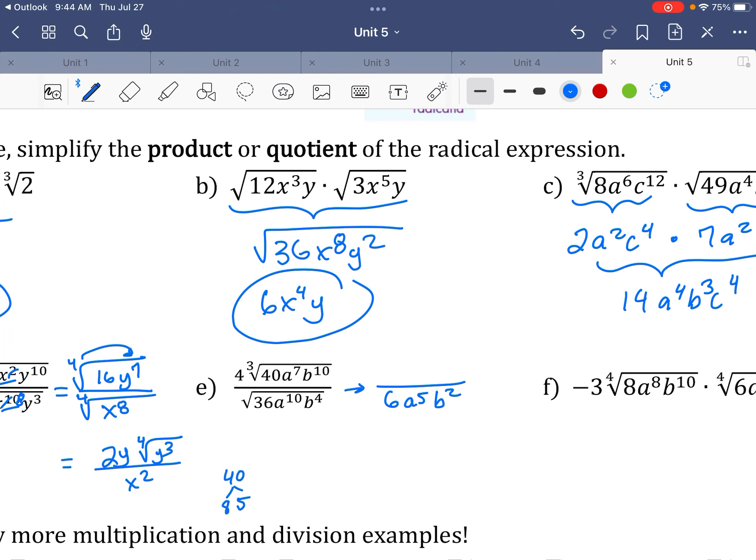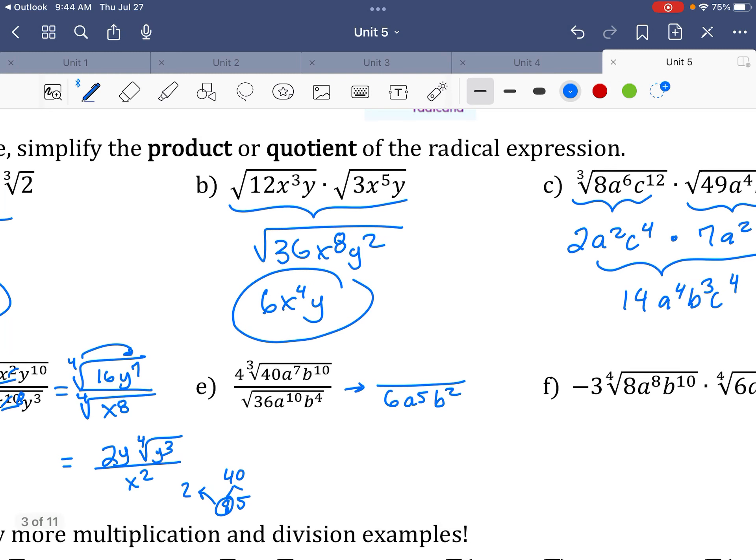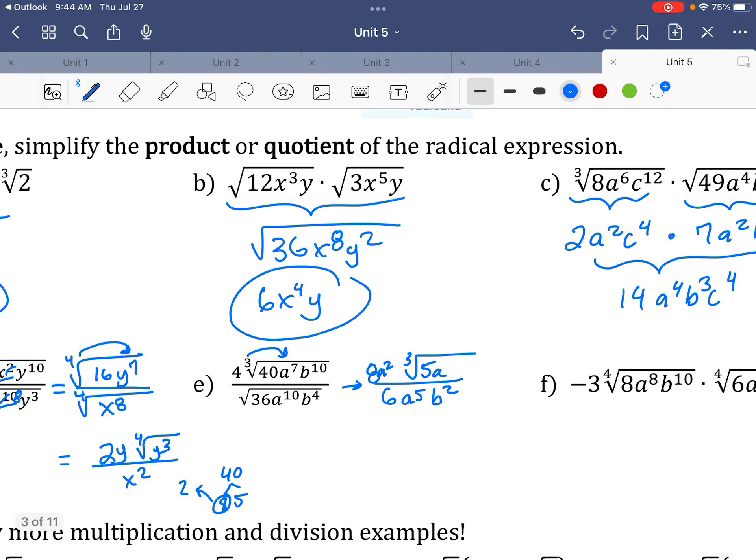Now up here, 40. 40 is 8 times 5. Again, I picked 8 because it's a perfect cube. So that's going to come out and be a 2 with a 5 left inside. So 2 times a 4 outside is 8. Leave some space. Put my cube root back and put a 5 back in. 3 goes into 7 twice with 1 left. And 3 goes into 10 three times.